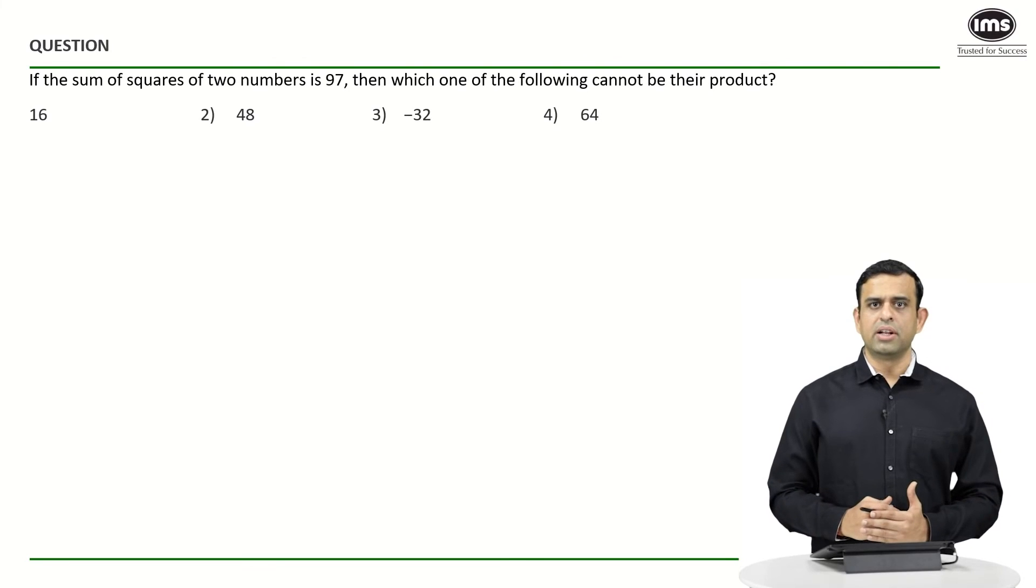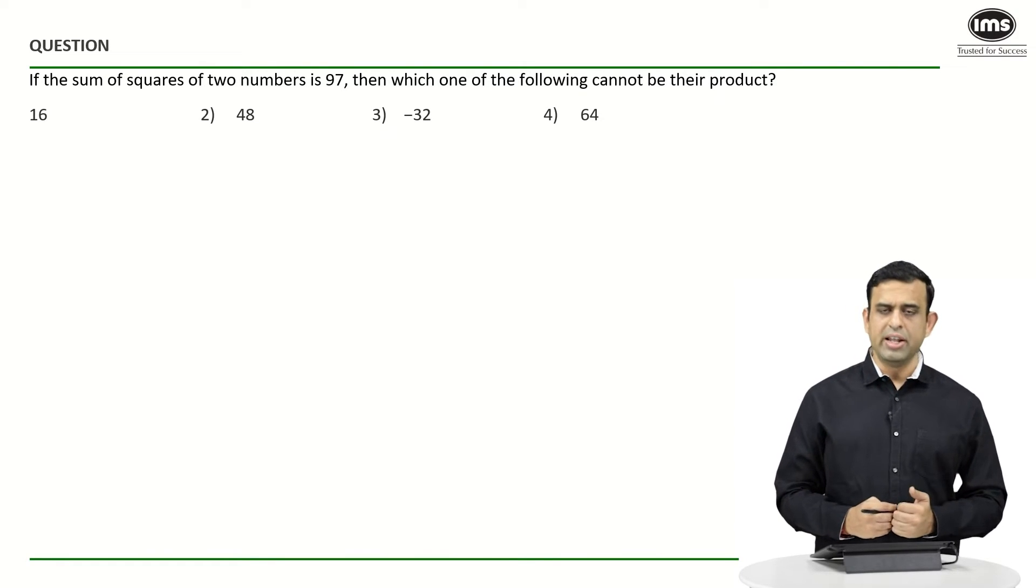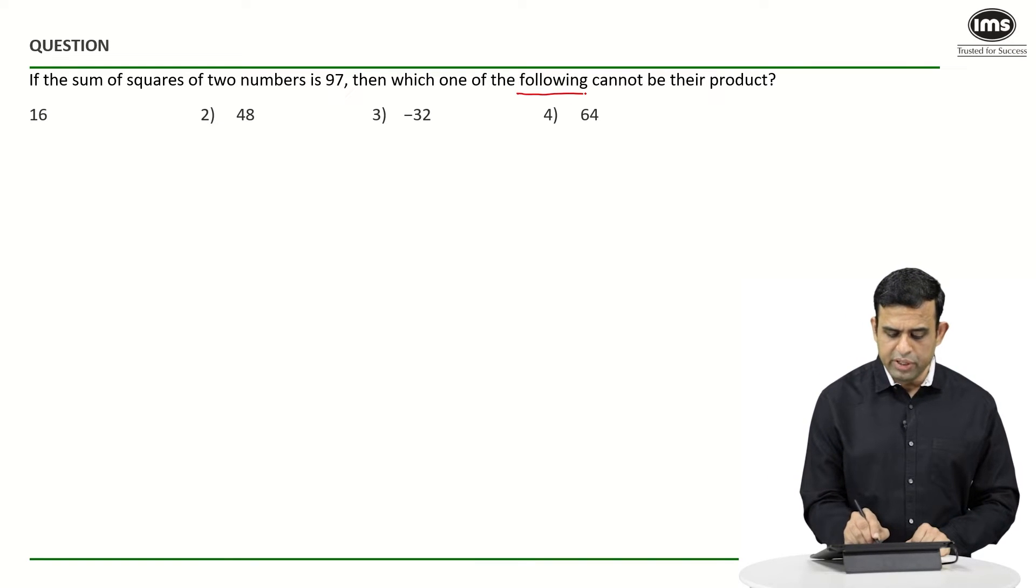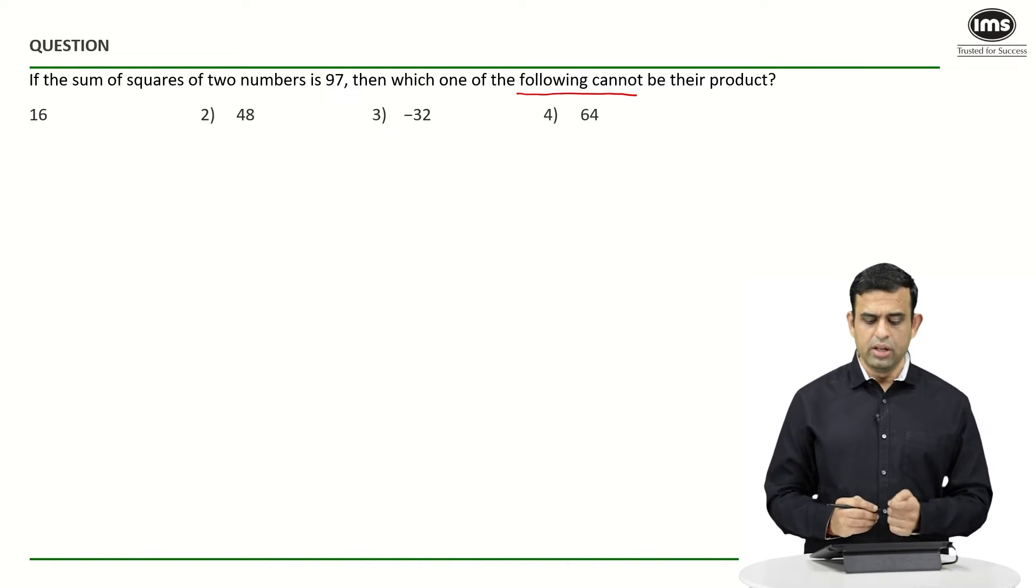In this particular sum, it says that if the sum of the squares of two numbers happens to be 97, which of the following cannot be—please be careful about the word cannot be—their product.